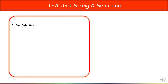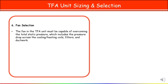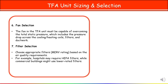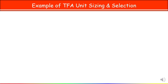The next step is fan selection. The fan in the TFA unit must be capable of overcoming the total static pressure. First, calculate the external static pressure, which includes the pressure drop across the cooling coil, heating coil, filter, and ductwork. Once you have the total static pressure, use manufacturer catalogs to select the fan based on air flow rate and external static pressure. Also select the appropriate filter MERV rating based on air quality requirements — for example, in hospitals.